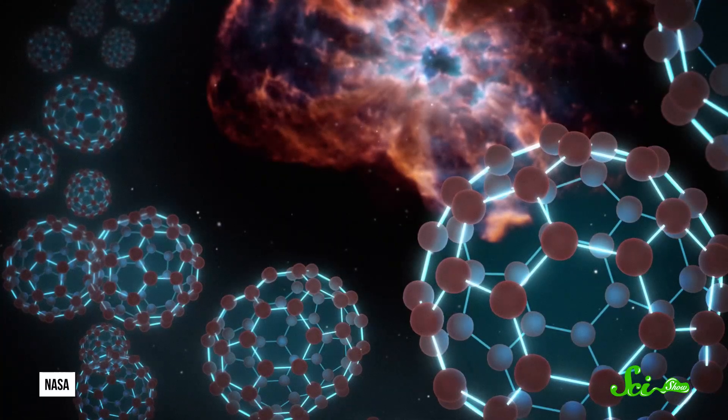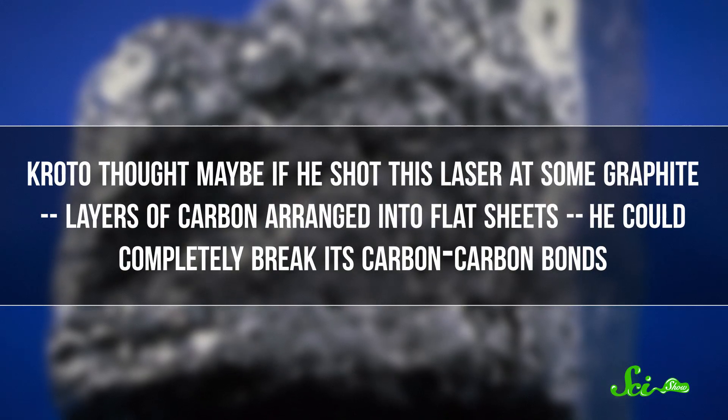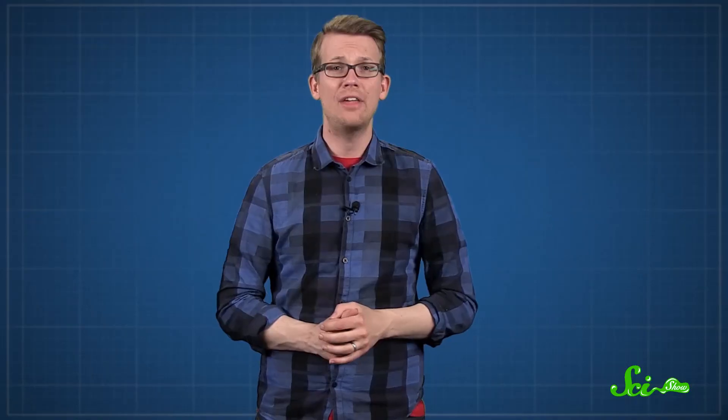In the 1980s, Croto was investigating some long, flexible chains of carbon that formed clouds in interstellar space, and wanted to look at some of them close up. The problem was, they were in space, and he was on Earth, so he needed to figure out how to make them himself. He discovered that Smalley had access to a super-powerful laser. Croto thought maybe if he shot this laser at some graphite, layers of carbon arranged into flat sheets, he could completely break its carbon-carbon bonds. Then the carbon atoms might reorganize themselves into the molecules he wanted to study. And lo and behold, when Smalley and Croto tried it, they did find those long carbon chains that they wanted to make. But they also found some of the carbon atoms had bonded into this other weird thing.